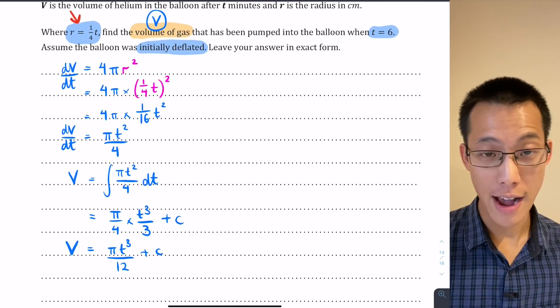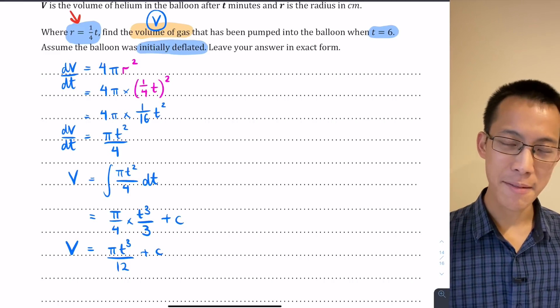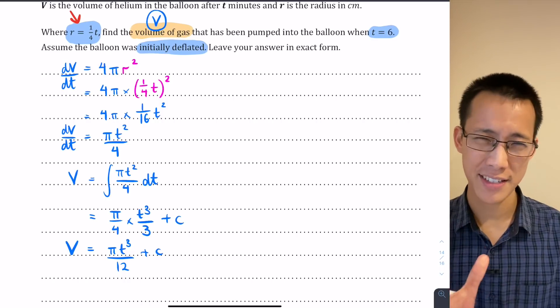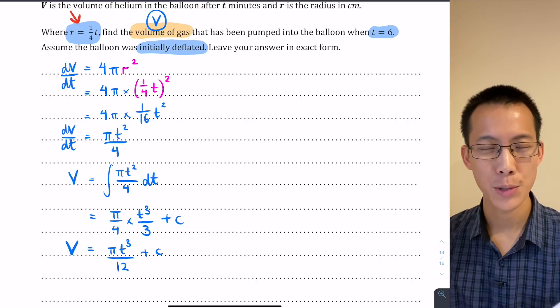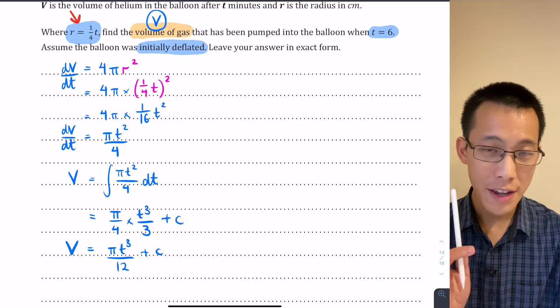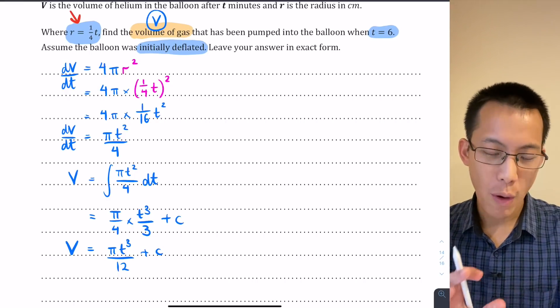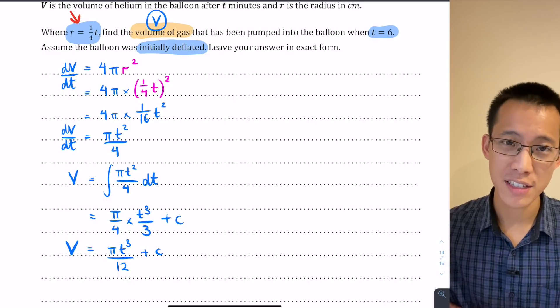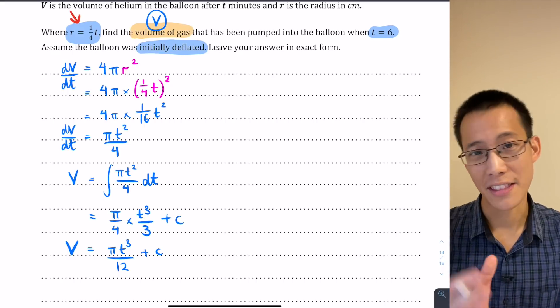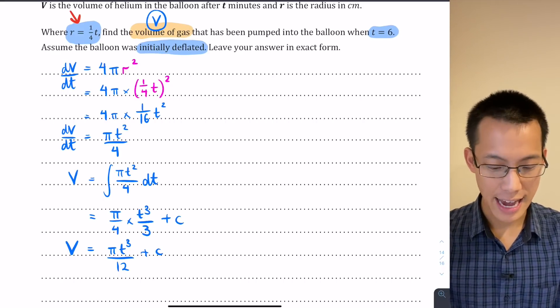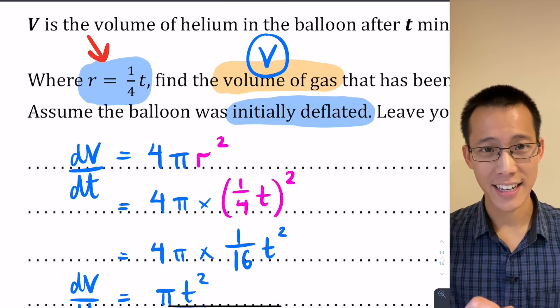This is good progress because I'm supposed to find a volume when t equals 6. But I can't do that yet because I've got this pesky plus c, this constant of integration hanging around. If you think back to our earlier question, the way that we evaluate a constant of integration, find out what it's equal to, is we use the question to find some extra piece of information. In the initial question it was a coordinate that the graph passed through. In this case, the question tells us, assume the balloon was initially deflated.